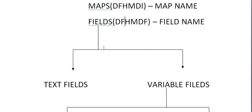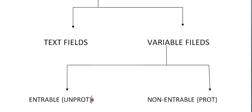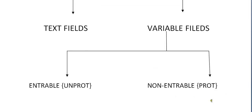In fields, there are text fields and variable fields. A text field is static — the data won't change; for example, the label 'Enter your name' on a screen is a hard-coded text field. Variable fields are enterable or non-enterable. Enterable fields are unprotected, and non-enterable fields are protected — these are for entering data into the screen.